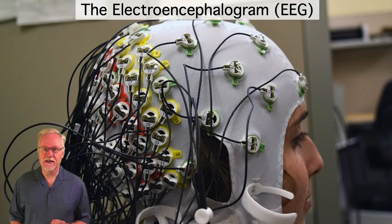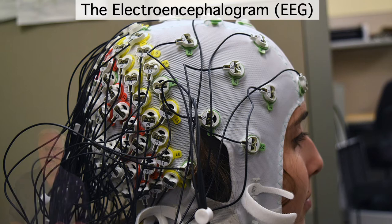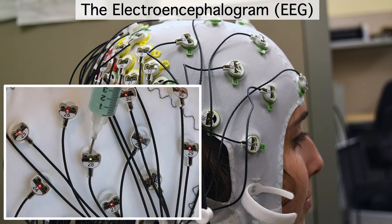To record the EEG, we put a set of electrodes on the subject's head. In most labs, the electrodes are embedded in a cap. The electrodes don't directly contact the skin. Instead, we squirt in a conductive gel that makes contact between the skin and the metal electrode pellet.